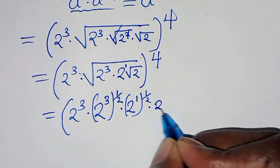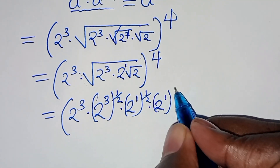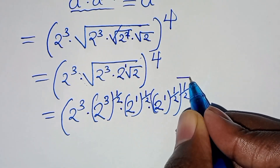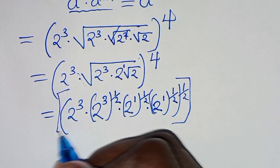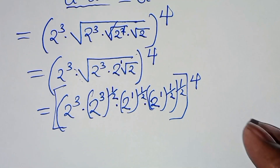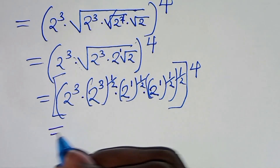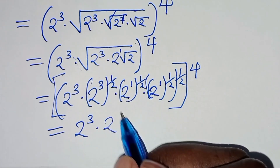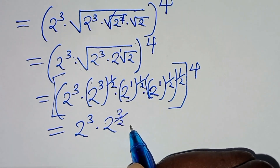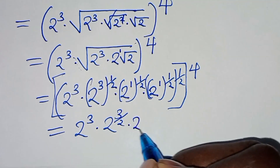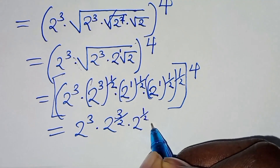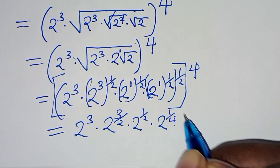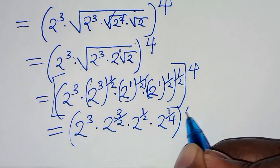So we have 2 to power 1 times 2 to power one half, then times 2 to power one half, close the bracket, raised to power 4. From here we have 2 to power 3 times 2 to power 3 over 2, then times 2 to power one half times 2 to power one half, which gives 2 to power one quarter, close the bracket, raised to power 4.